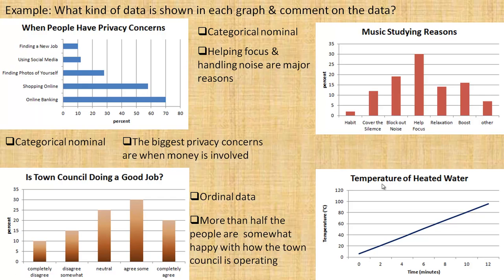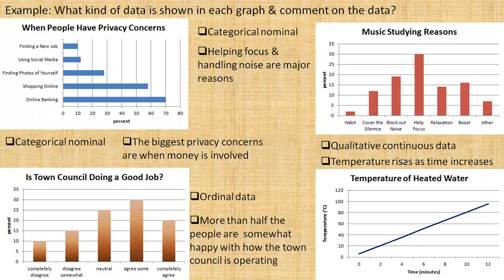The last one is the temperature of heated water. This would be quantitative continuous data. It's continuous because you can have temperatures in between whole numbers, and it's certainly numerical — the time is a number and the temperature at those times is also a number. It seems that temperature rises as time rises. This could be, for example, heating water in a kettle: the longer you heat it, the hotter it gets. And that's the end of the video.